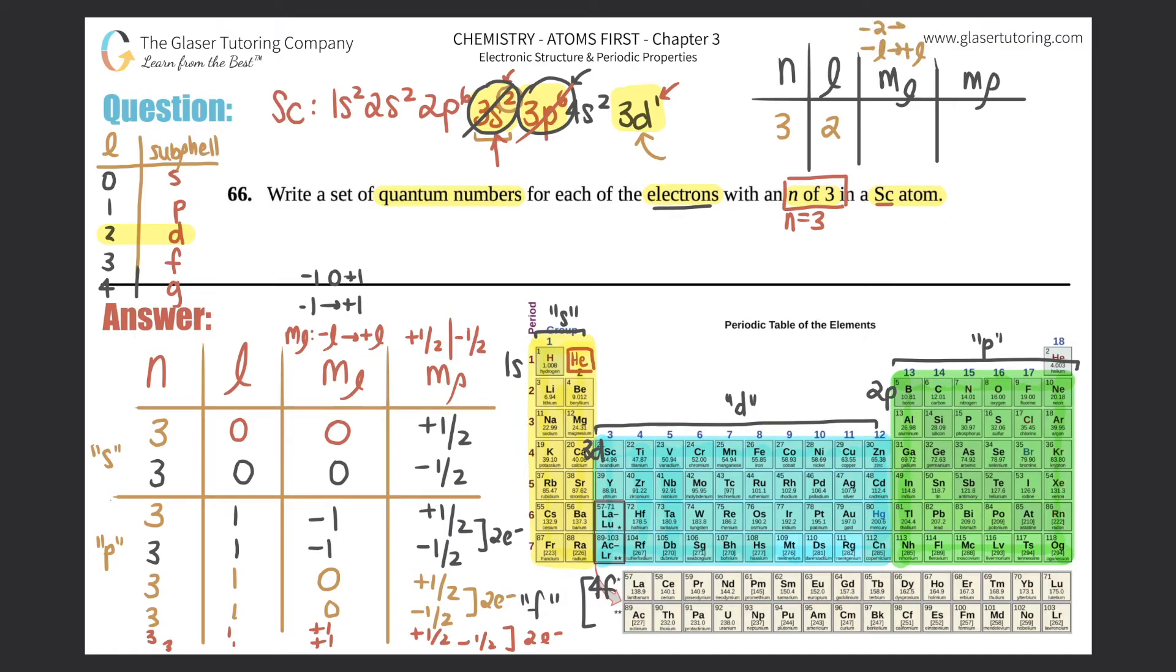Now remember, the ml is from negative l all the way to positive l, so it'd be negative 2 all the way to positive 2. We only have one electron here, so it's got to be in the first number, so that's why it should be negative 2. Now this one, it doesn't really matter whether it's going up or down. You could say that it's plus 1/2 or you could say that it's minus 1/2, but that's just the one electron. I'm just going to say it's plus, it doesn't really matter—plus 1/2. And that's the one electron in the d orbital.